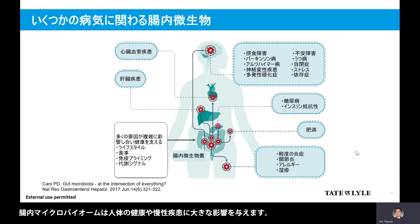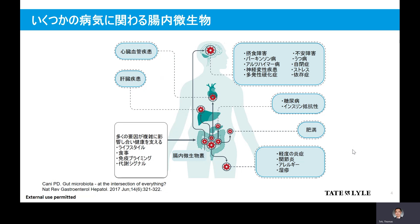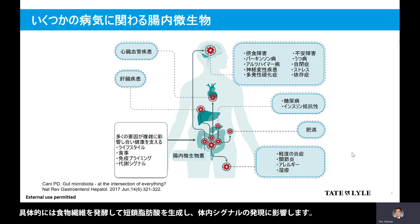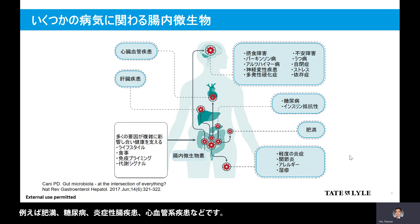The gut microbiome plays an important role in human health and influences the development of chronic diseases ranging from metabolic disease to gastrointestinal disorders. Dietary intake and environment has a profound effect on shaping our gut microbiota. The population of intestinal bacteria will mediate their beneficial effects through fermentation of dietary fiber to produce short-chain fatty acids and endogenous signals that are important for lipid homeostasis and reducing inflammation. Microbiota composition is linked to physiological health benefits such as obesity, diabetes, inflammatory bowel disease, cardiovascular disease, and so on.